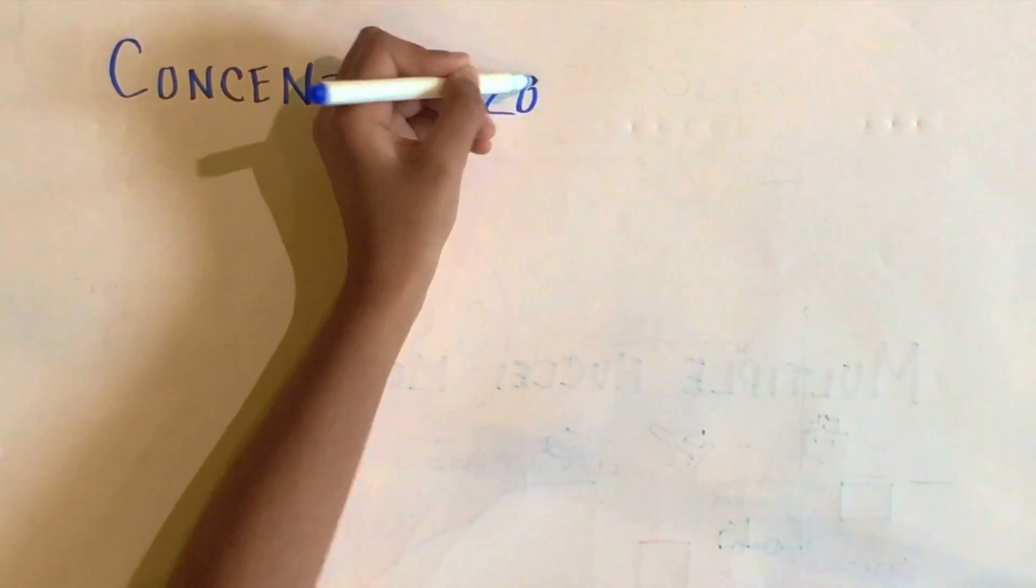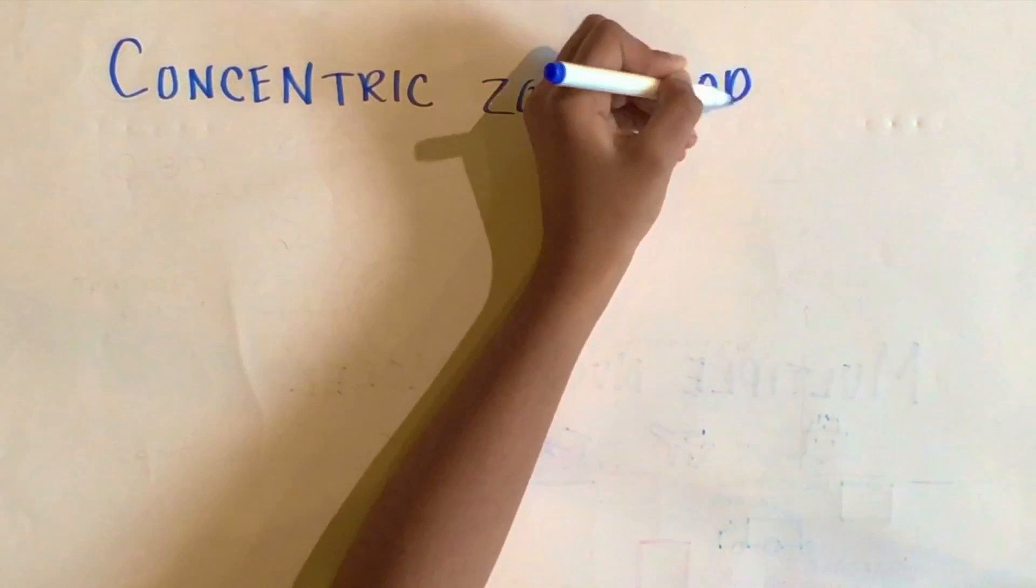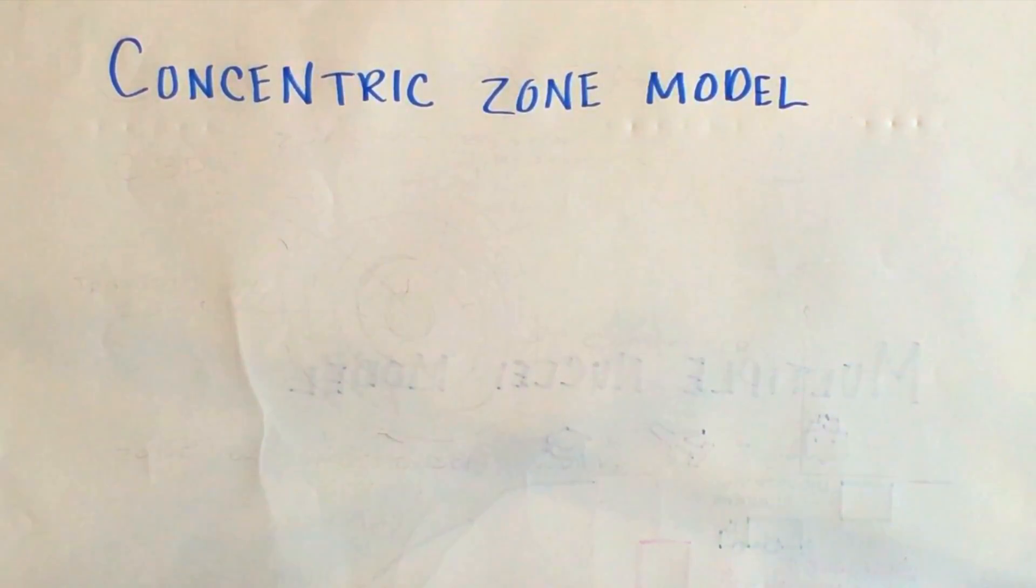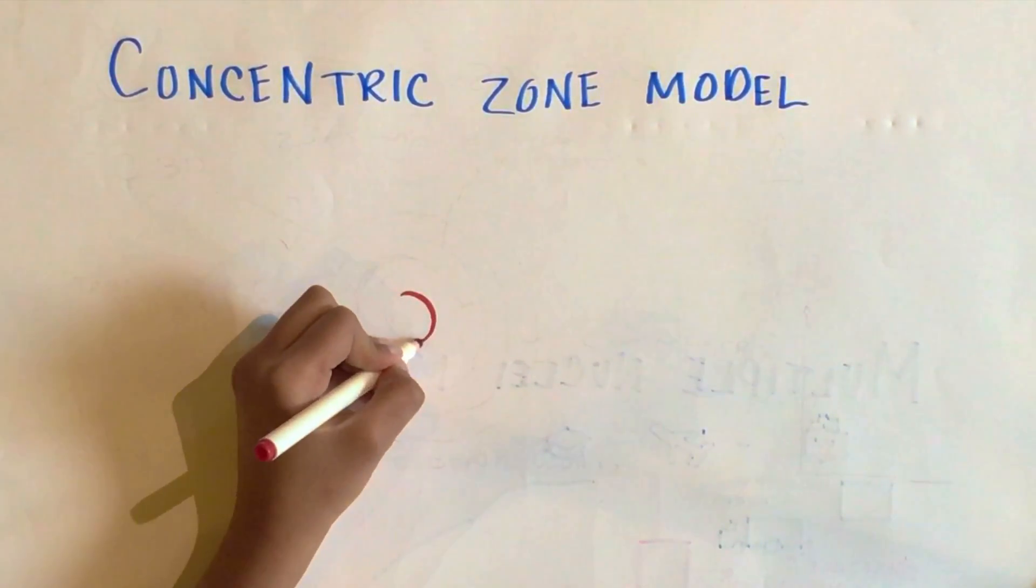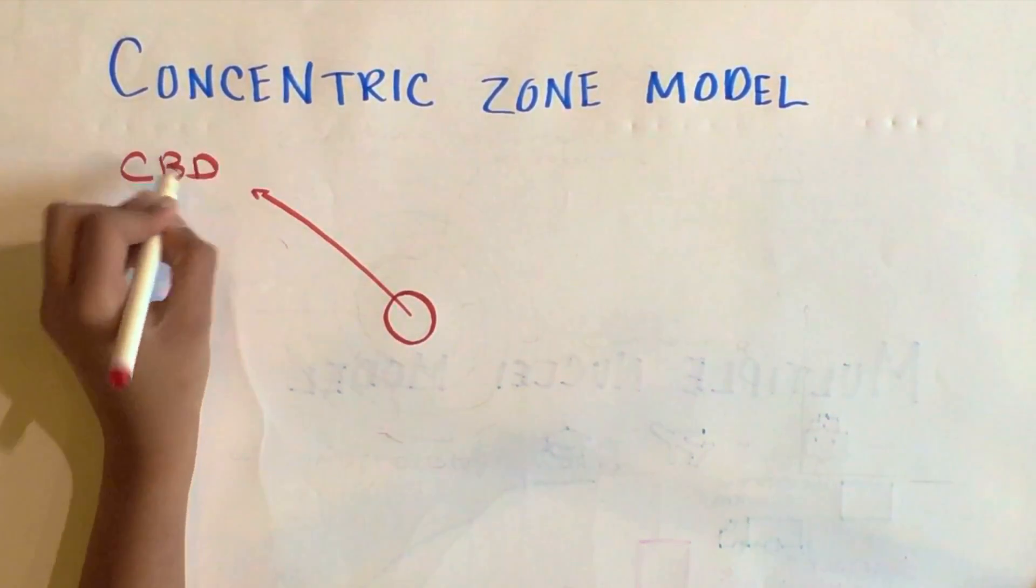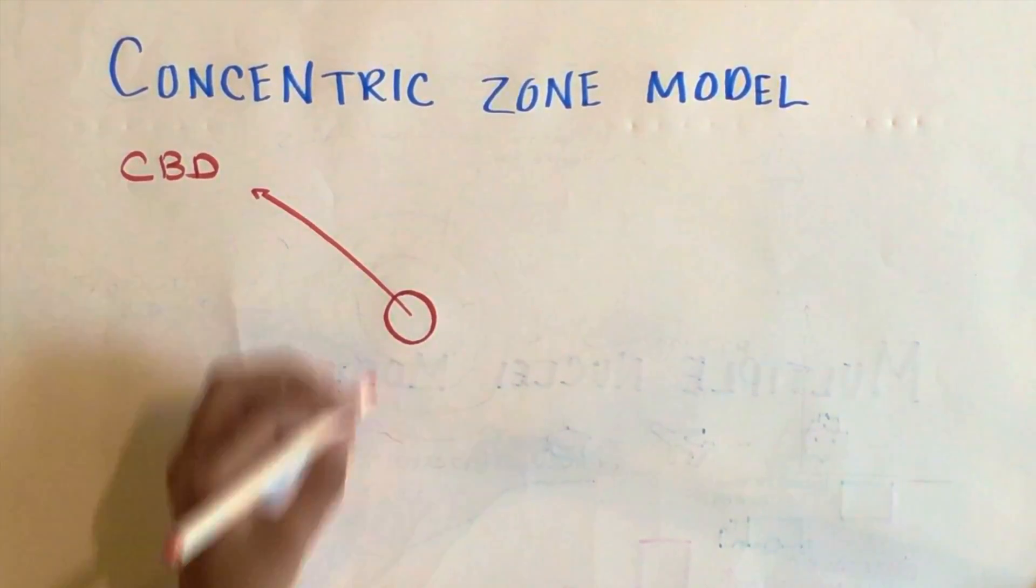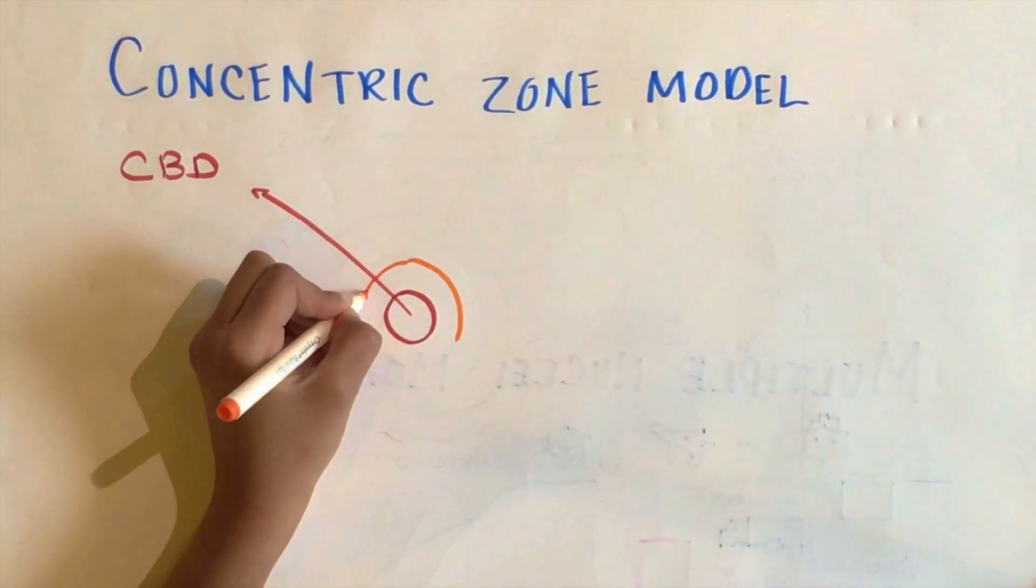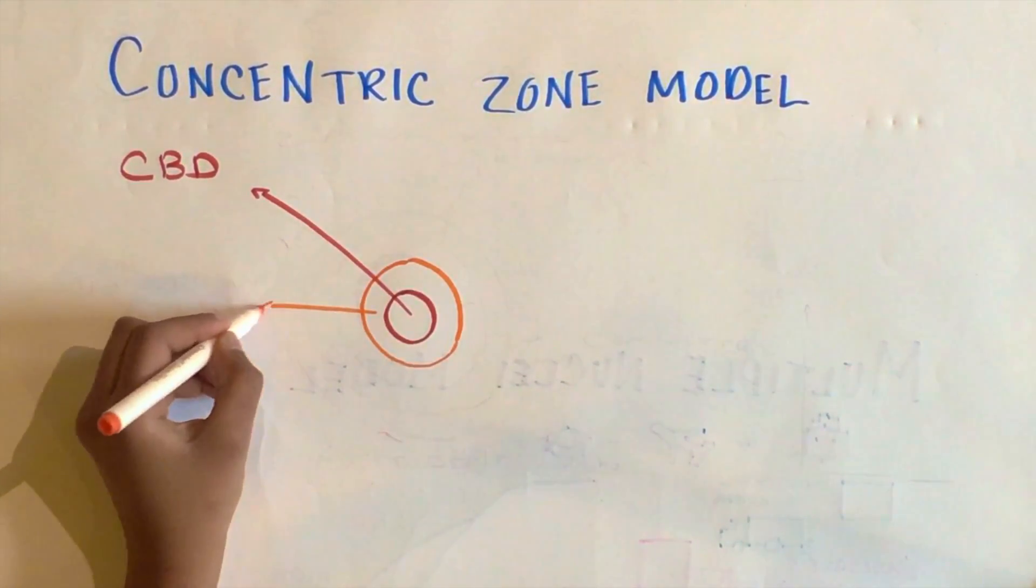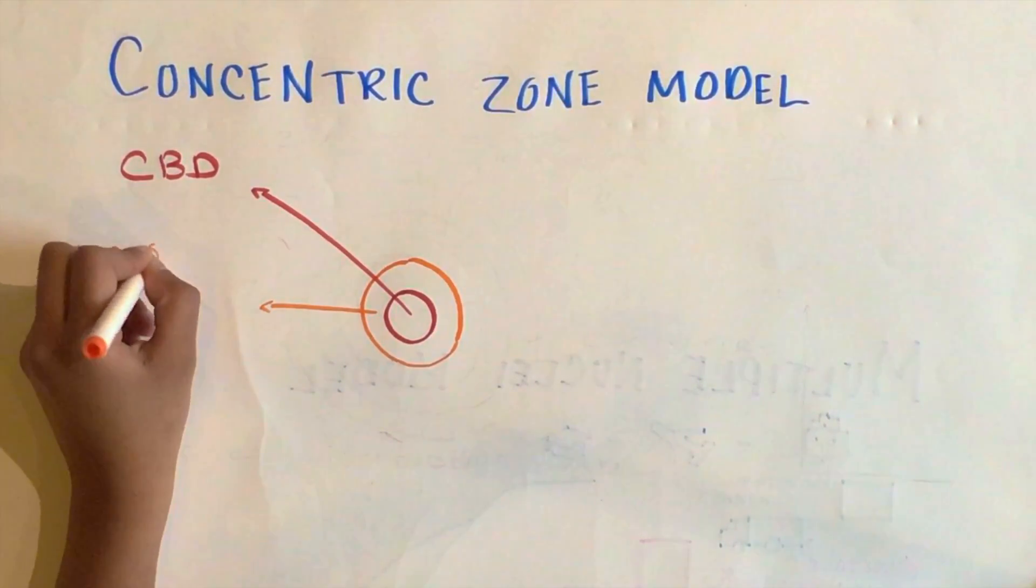The first model we will begin with is the concentric circle, or zone model, created in 1923 by sociologist E.W. Burgess. In this model, a city is constructed like a series of concentric circles, meaning they build on around each other from a central circle. The focal point of this model is the CBD, where the bulk of the jobs are provided to the areas surrounding.